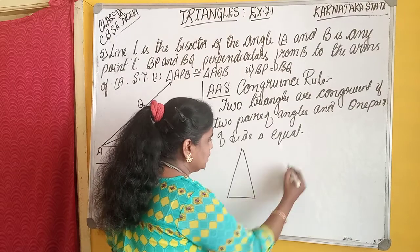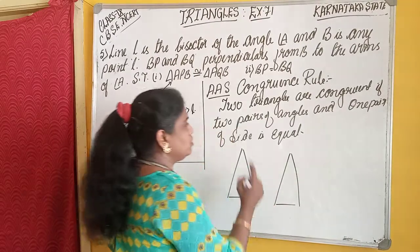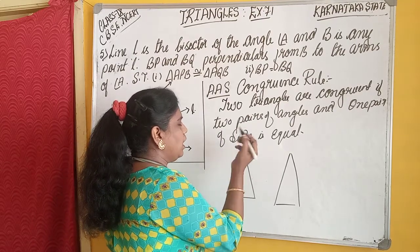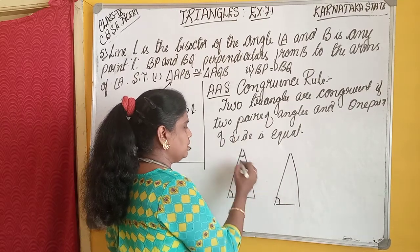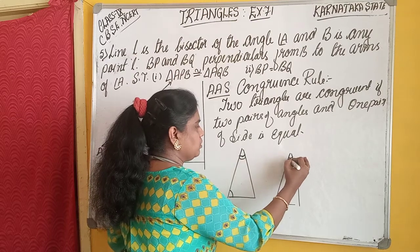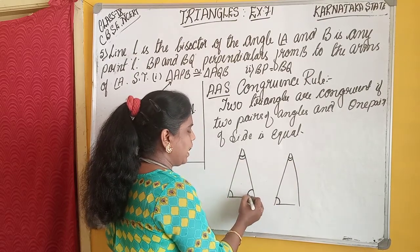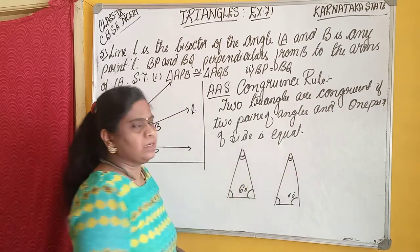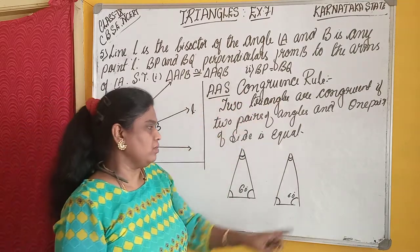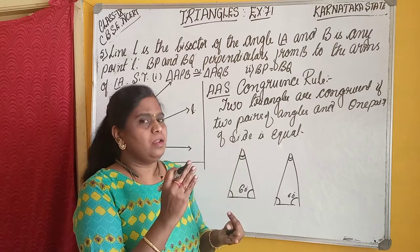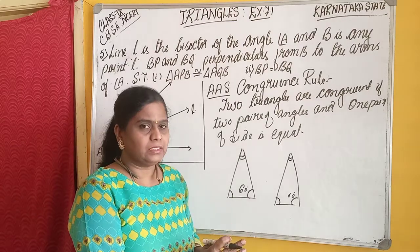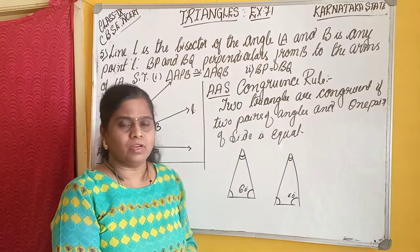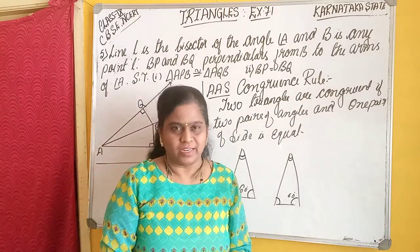For example, consider two triangles. Here, any two pairs of angles — this angle and this angle. If this angle is congruent to that angle, and this angle equal to this angle — for instance if this angle is 60 degrees and it is also 60 degrees — then these two triangles are congruent. This is the AAS congruent rule: any two pairs of angles and one pair of sides are equal, then according to AAS congruency, those two triangles are congruent.